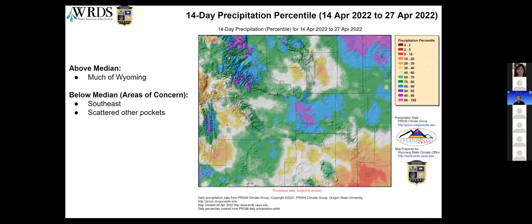This is the 14-day precipitation as a percentile — the total precipitation that's fallen over the last two weeks. You can see quite a bit of green, blues, and purples on the map, which is good. A lot of Wyoming is covered with that. The gray areas are right at the median. The green, blue, and purple are higher than median precipitation.